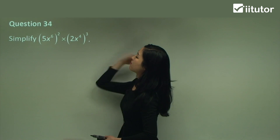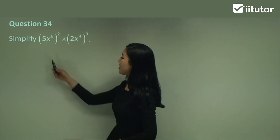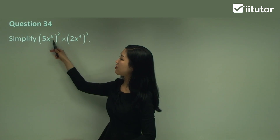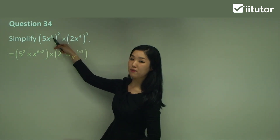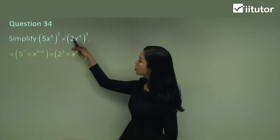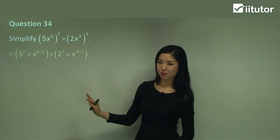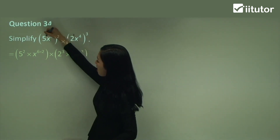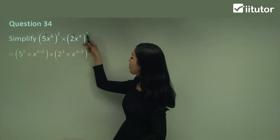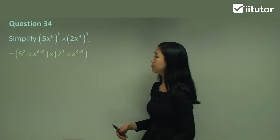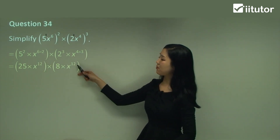Question 34. There are two different expressions — we can treat them individually. Make sure you apply the power of 2 to everything inside each bracket. So for the first bracket: 5 squared times x to the power of 6 times 2 — we multiply those powers. For the second bracket, times 2 cubed — cube the 2 as well — and then multiply the powers: x to the power of 4 times 3. Note that 2 and 5 each have a power of 1. So it's 1 times 2 for the 5, and 1 times 3 for the 2. Applying the same rule: 5 squared is 25, 6 times 2 is 12, 2 cubed is 8, and 4 times 3 is 12.